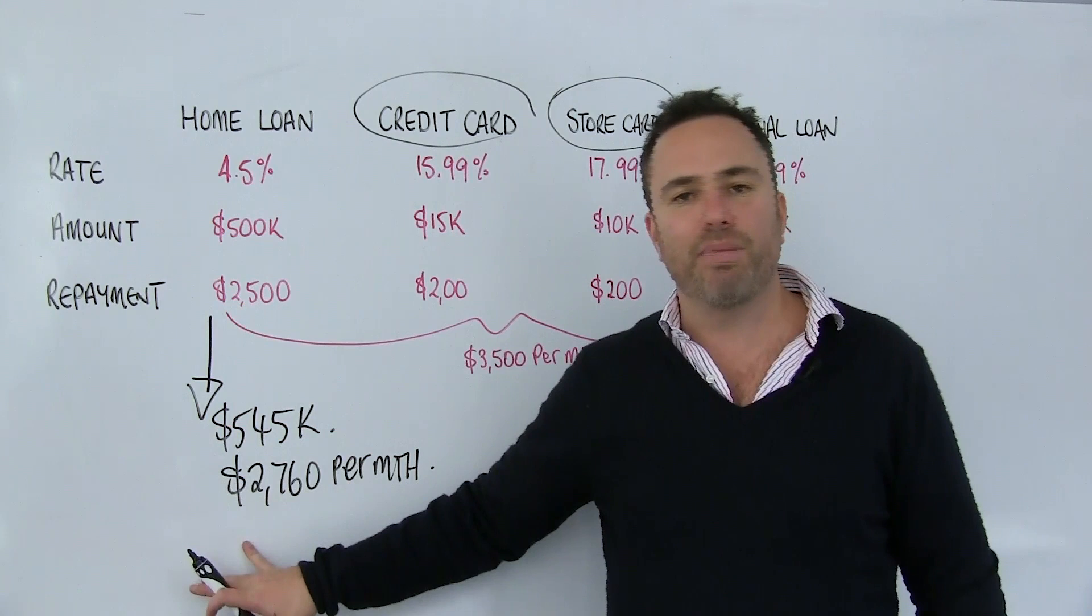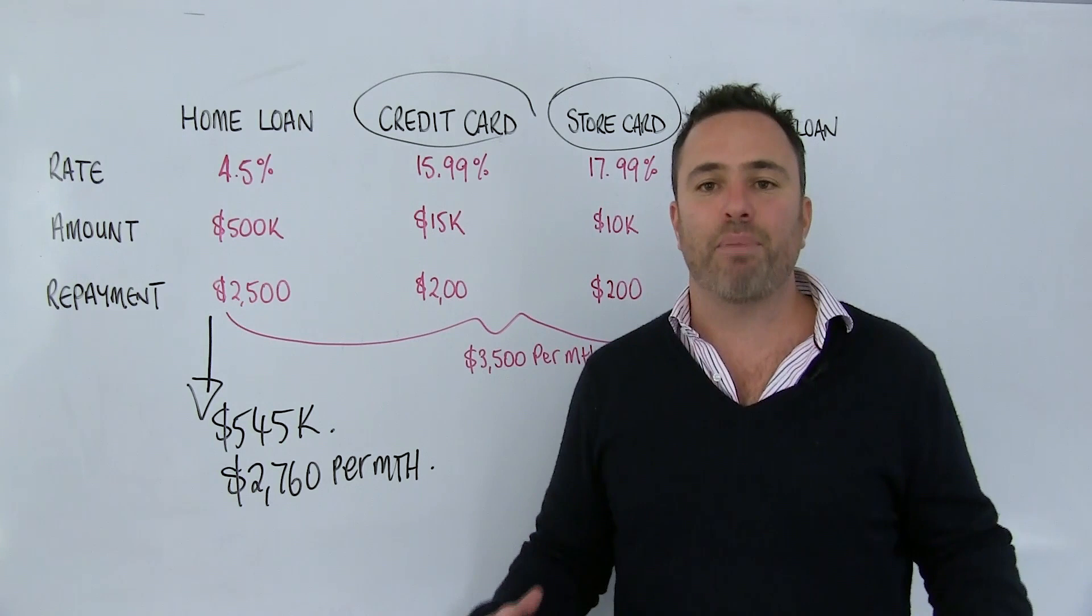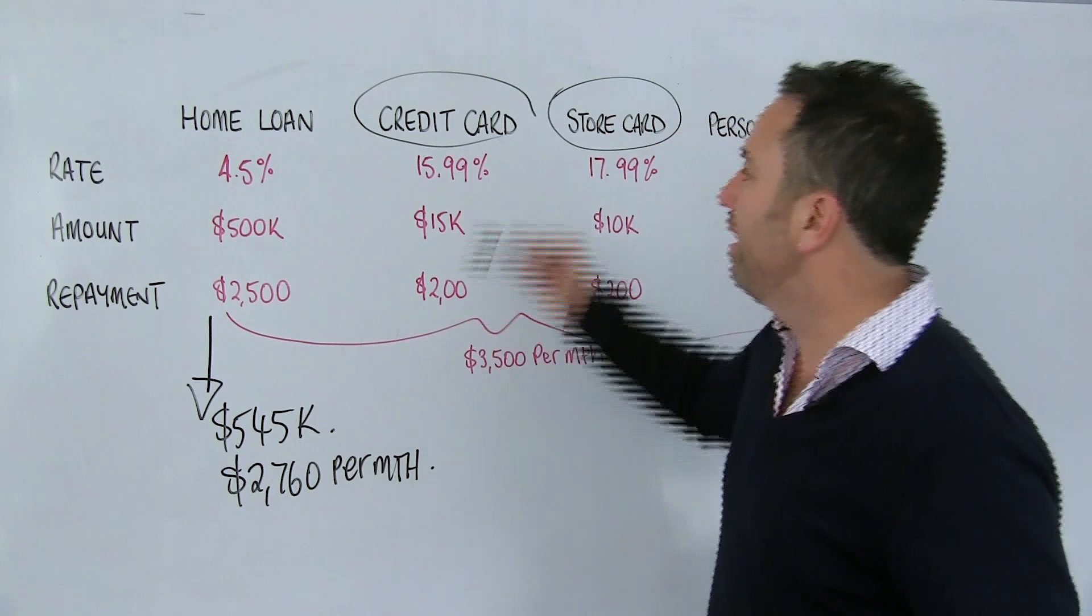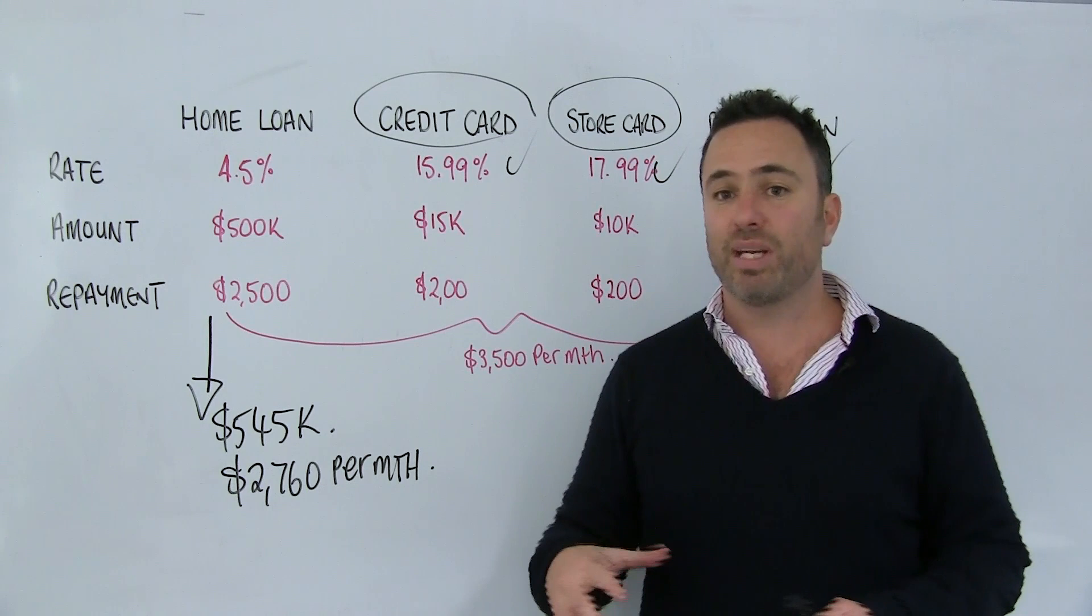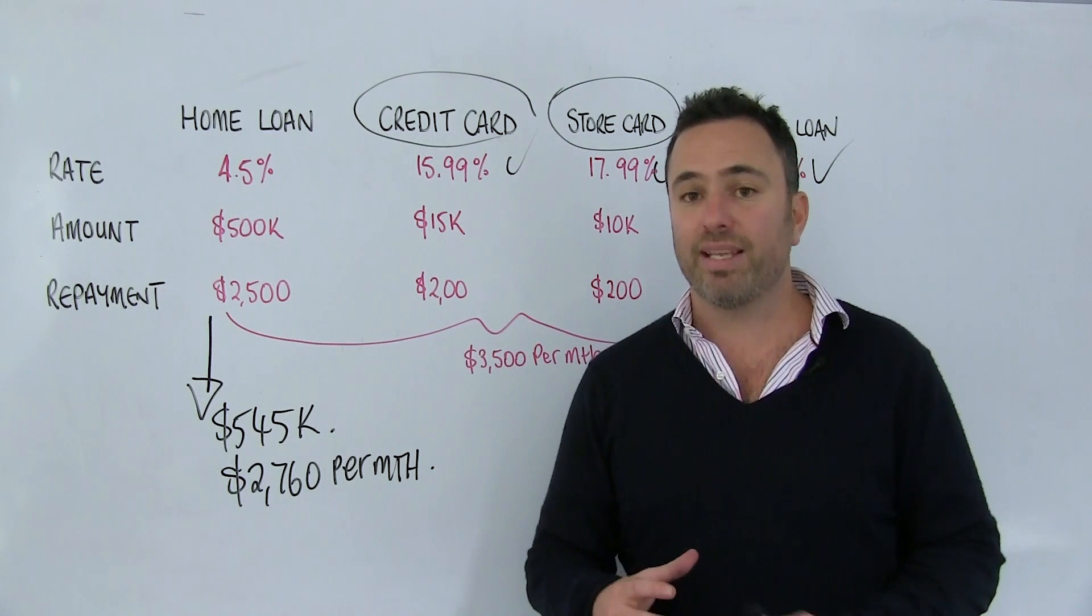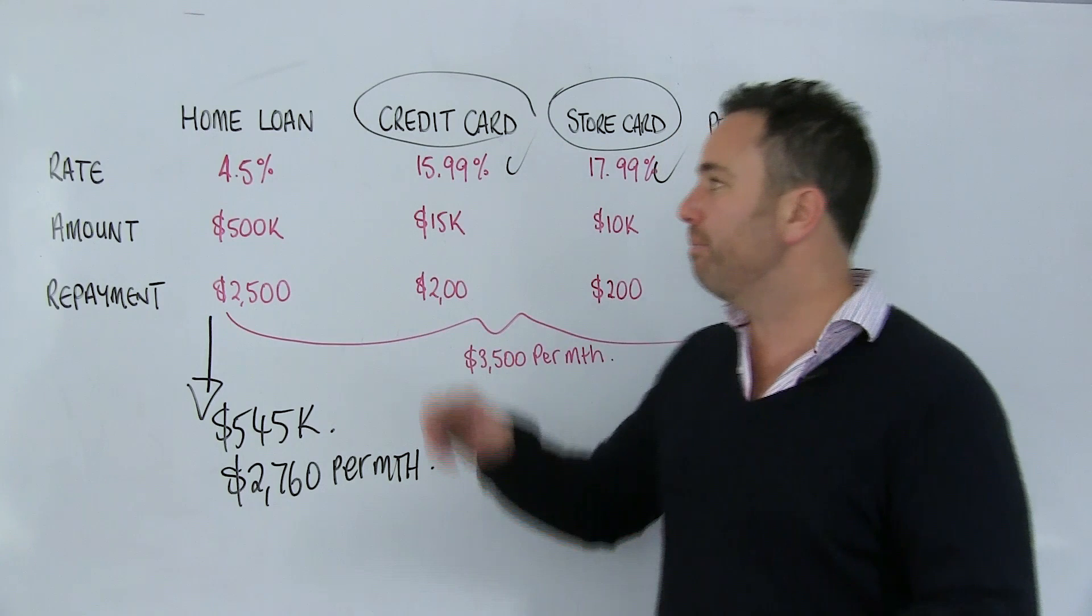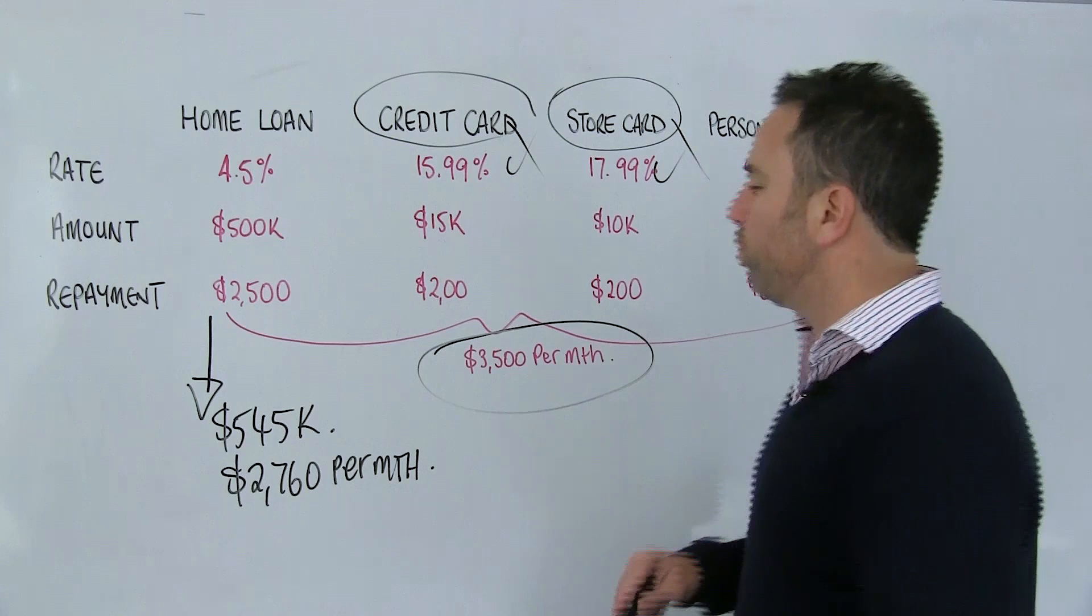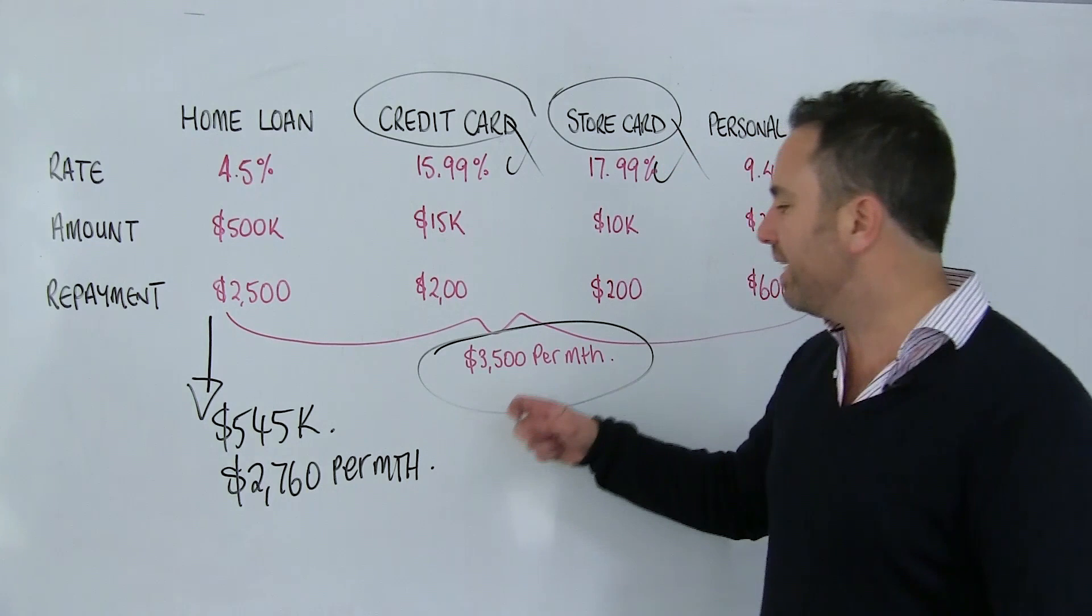So if you go and speak to your lending specialist, the mortgage broker, and you say, I need to consolidate some debt, the first question they should be asking is, how did you get into this scenario? And sometimes there's really valid reasons. But as I said, when you start to get into the spiral of this unsecured debt, it can be pretty hard to get out of. What we say is, okay, how did this occur? How do we avoid it occurring again? Because there's no point consolidating all of this unless you're going to close these things off. And the most important thing to do is ensure that you keep paying at $3,500 per month. There's no point getting back to $2,760. You need to continue to pay at $3,500 and get the benefit of the lower interest rate.